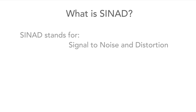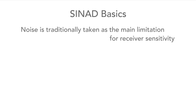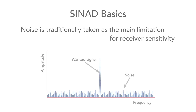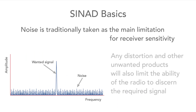SYNAD stands for Signal-to-Noise and Distortion, so this specification is more than just a signal-to-noise ratio because it includes unwanted distortion products as well. Whilst noise is traditionally the main limitation for sensitivity, any distortion and other unwanted products will also limit the ability of the receiver to discern the wanted signals.